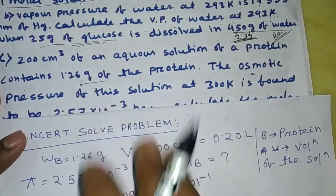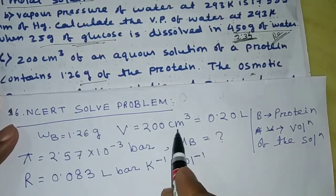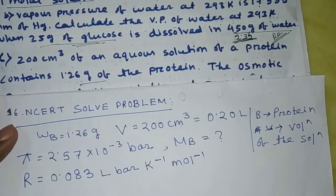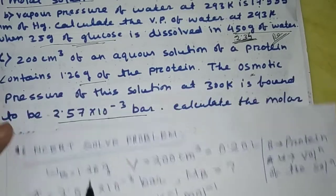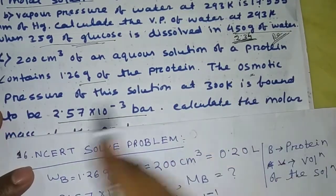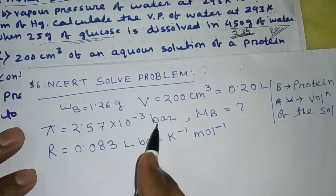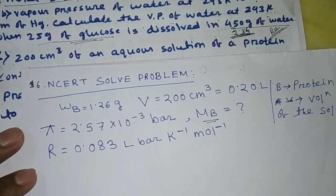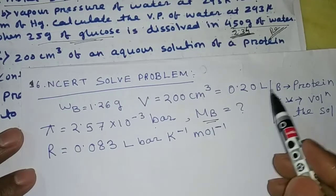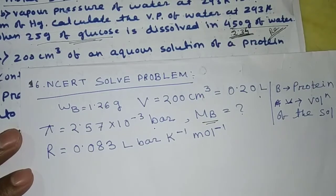The given data: W, mass of the solute, is equal to 1.26 grams. Volume of the solution is 200 cm³, which is 0.20 liters. Osmotic pressure at 300 Kelvin is 2.57 × 10⁻³ bar. R is equal to 0.083 liter bar Kelvin⁻¹ mol⁻¹.